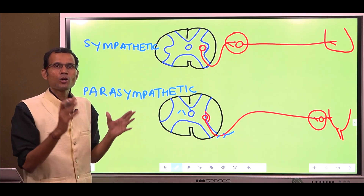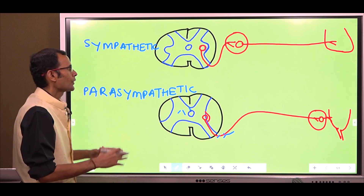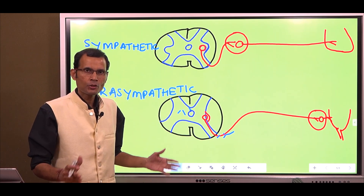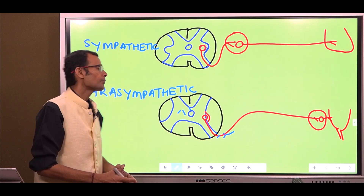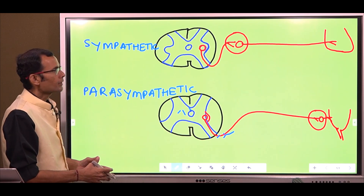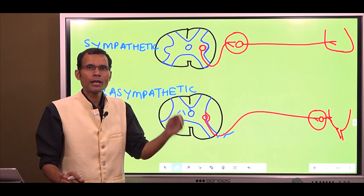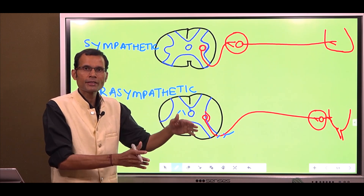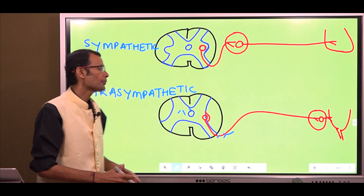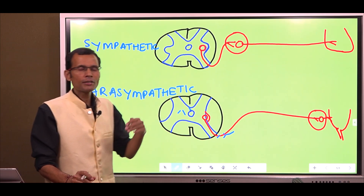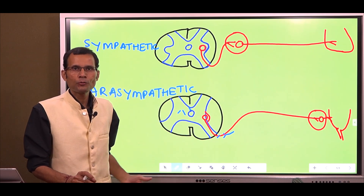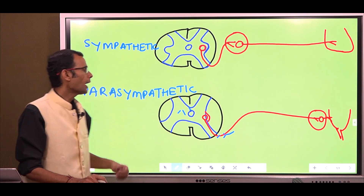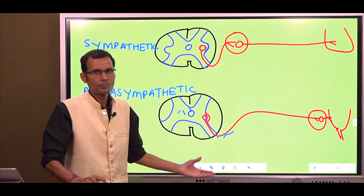Let's have a brief understanding of ANS neurotransmission. Sympathetic and parasympathetic are the two branches of ANS. Sympathetic is called thoracolumbar outflow because they mainly arise from the thoracic and lumbar segments of the spinal cord. Parasympathetic is called craniosacral outflow because some cranial nerves are parasympathetic in function, and sacral segments also give rise to parasympathetic nerves.